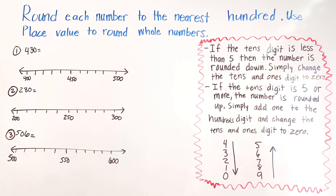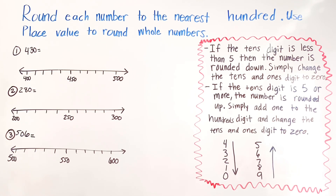In today's video we're going to be working on rounding each number to the nearest hundred using place value. On the right hand side we have: if the tens digit is less than five, then the number is rounded down — simply change the tens and ones digits to zero. If the tens digit is five or more, the number is rounded up — simply add one to the hundreds digit and change the tens and ones digits to zero.